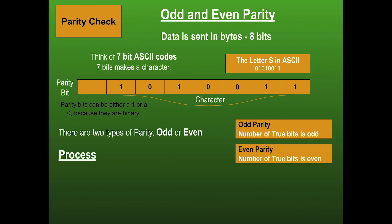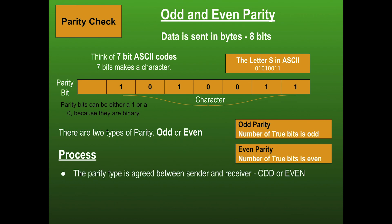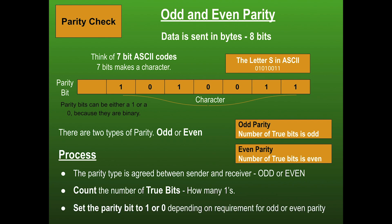The parity is agreed in advance between the sender and receiver as either odd or even. You then count the number of true bits (ones) in the byte. For example, if there are four true bits and you want odd parity, you set the parity bit to one to make five true bits — an odd number. If you want even parity, you set the parity bit to zero because four is already even.